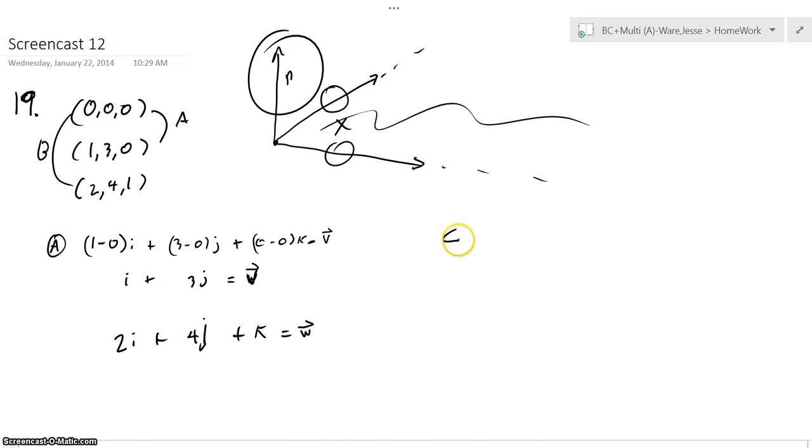So I'm going to write this out and using the magnitudes of each of the I, J, and K to make it just easier to do the cross product. Three zero.